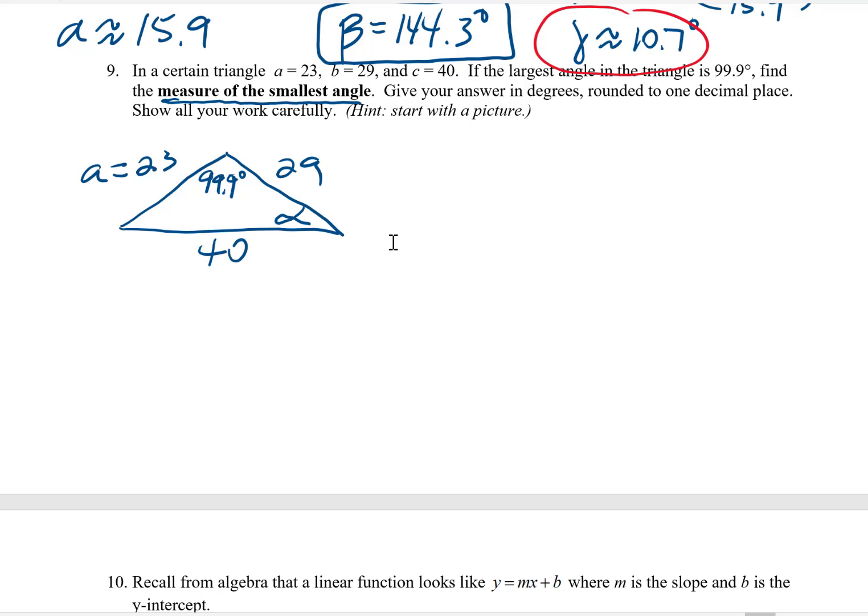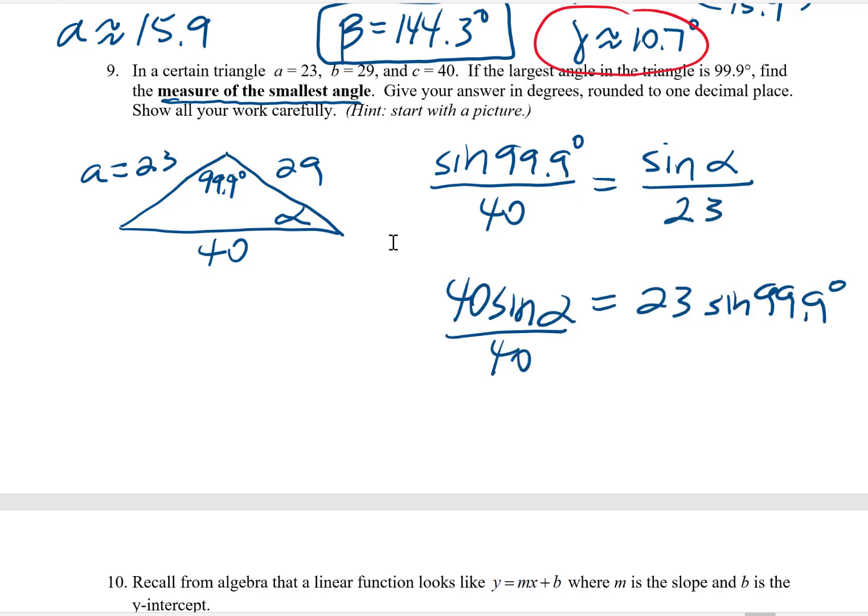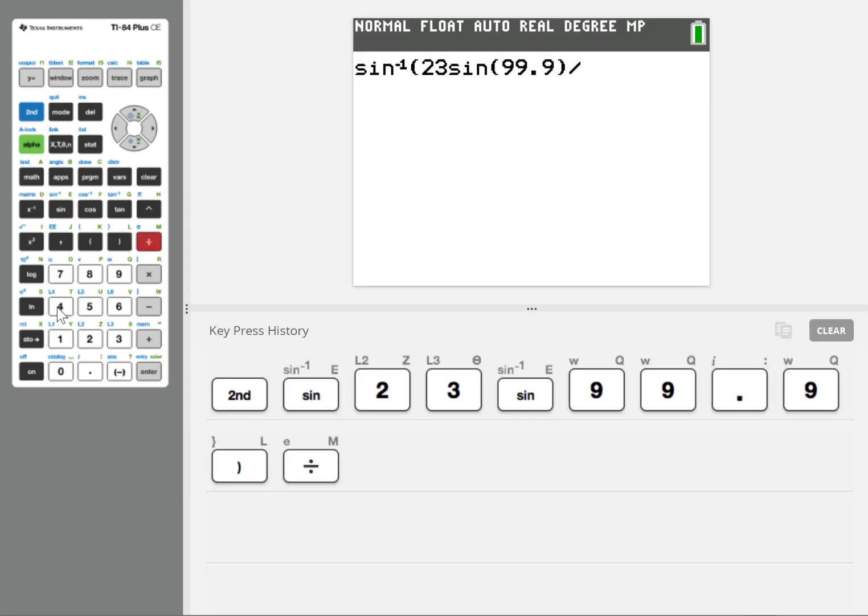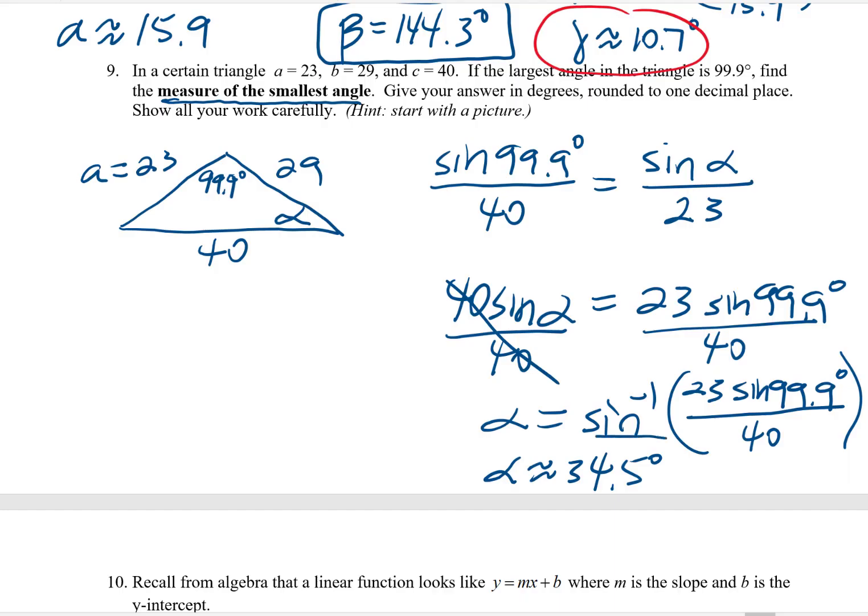I know it's acute. I can find this in one step, just using the law of sines. I have a complete pairing here, the 99.9 degrees and the 40, so I can set that up as one ratio, and then the other one would be sine alpha divided by that 23. Cross multiply, divide by 40. Remember, we know this angle is acute, which means I can just directly use the inverse sine function to find it. And so all I need to do is type this into the calculator, and I'm done. Sine inverse 23 sine 99.9 divided by 40, and that gives me 34.5 degrees. That is our final answer.